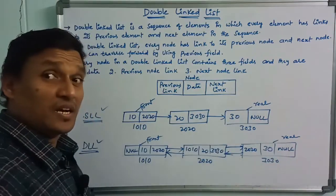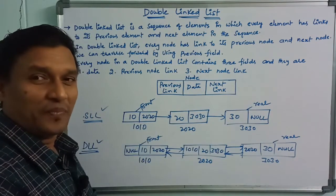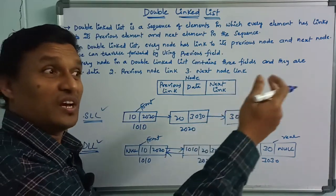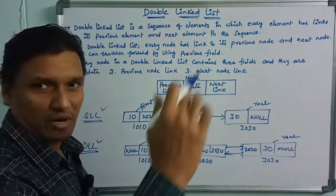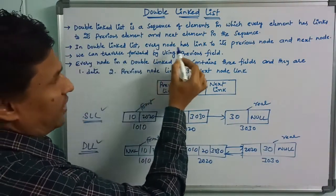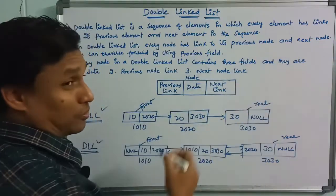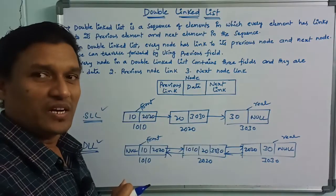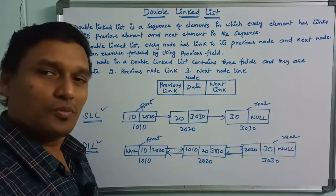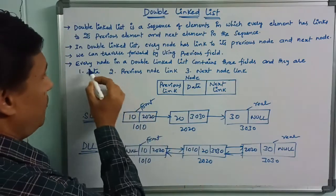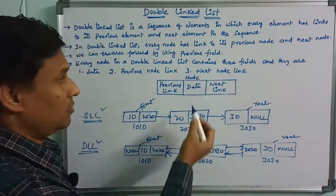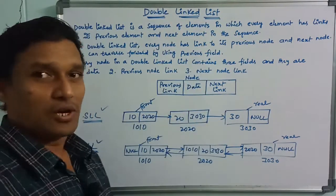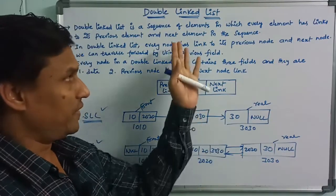Double linked list uses a sequence of elements in which every element has links to its previous element and next element in the sequence. Each node has a previous node link and a next node link. Every node in double linked list contains three fields: Data Field, Previous Link, and Next Link. Double linked list stores elements this way — that is the definition and diagram.